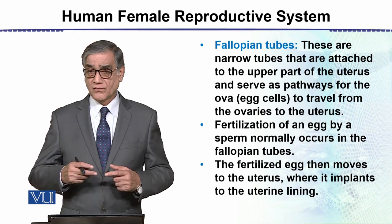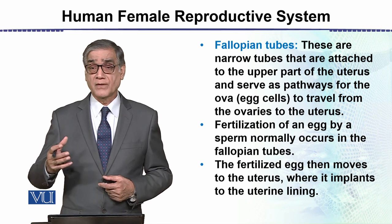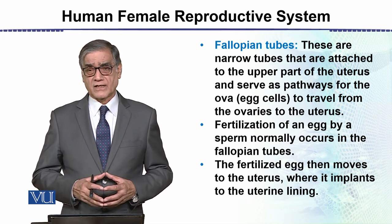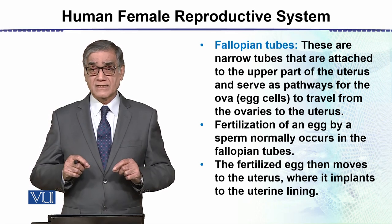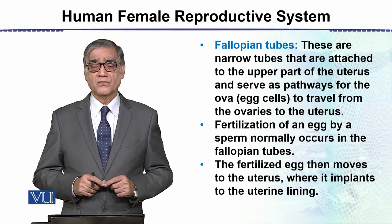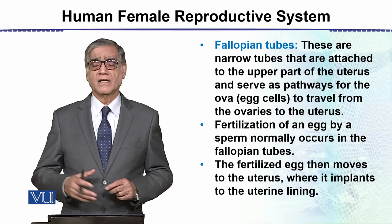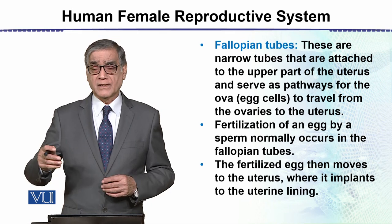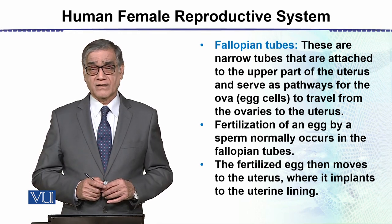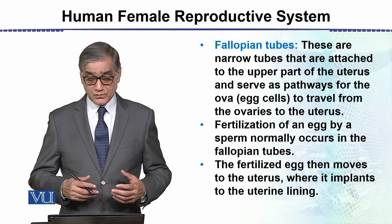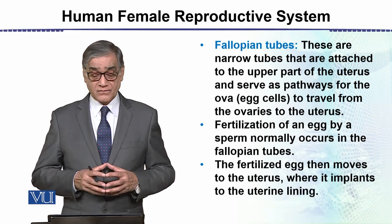Sperms move all the way upward from the vagina, past the uterus, and through the fallopian tube toward the fimbriae end. It is very close to the fimbriae, inside the fallopian tube, where fertilization actually occurs — because at the time of ovulation, the egg has been released. The fertilized egg then passes through the fallopian tube into the uterus, where it implants into the uterine lining. This is all about the Human Female Reproductive System.